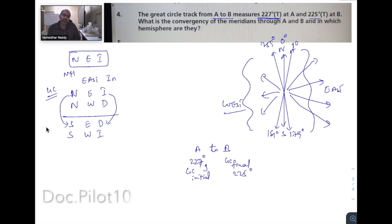Now, what is the direction of this track? Roughly is it East or West? 227 is somewhere here, so it is roughly West direction. Your track is going West. Did your track increase or decrease? From 227 it has decreased to 225. So the track is decreased. Going West, the track is decreased, so you are in Northern Hemisphere. In which hemisphere are they? The points are in Northern Hemisphere. It is that simple. It will take only two seconds to solve this problem.